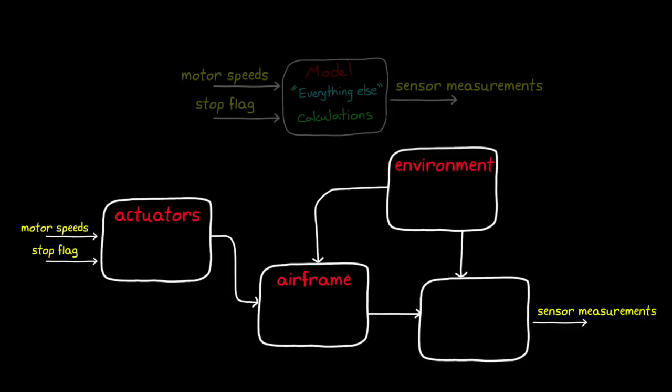the actuators, the environment, and the sensors. And then within each of these models, there's even smaller subsystem models like the gravity model or the IMU model.